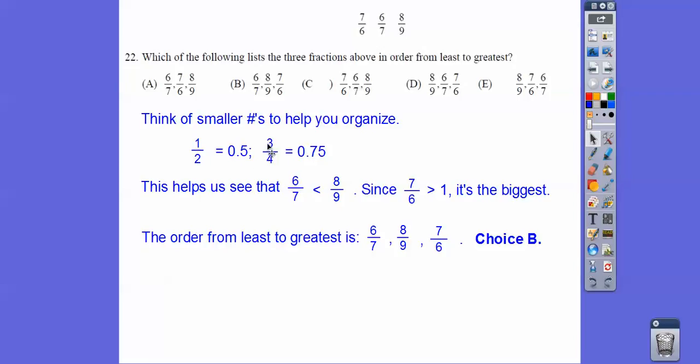So 1 half is less than 3 fourths. So that means 6 sevenths is going to be less than 8 ninths. And since 7 sixths is an improper fraction, it's the biggest number, so there they are listed in order, so choice B.